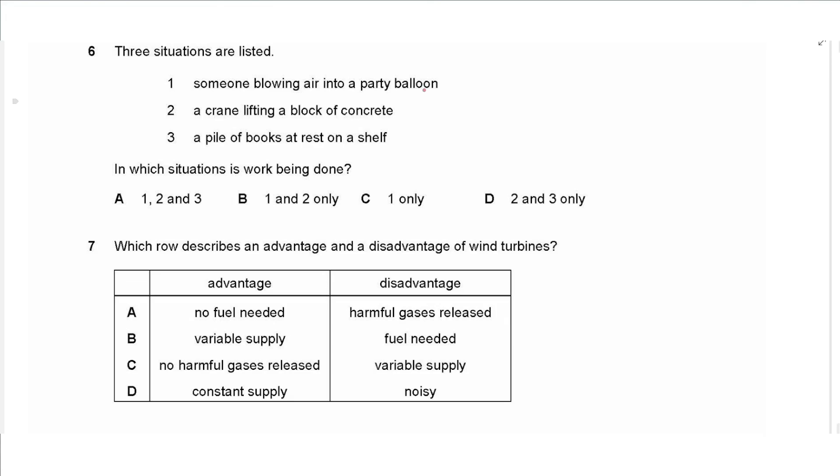Question six says three situations are listed: someone blowing air into a party balloon, a crane lifting a block of concrete, a pile of books at rest on a shelf. In which situation is the work being done? So work needs force and distance. So for the balloon the distance is the distance traveled by the expanding balloon, and for the crane we are lifting something upwards. And at rest that means there is no distance, distance is equal zero, so it's not three, it is one and two only. So we choose B.